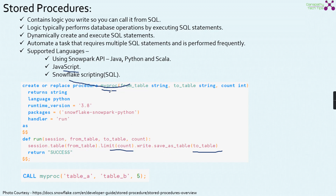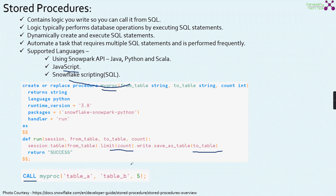Utilizing the Snowpark API for Python, we are firing typical Spark against Snowflake. When you call the myproc function, note that unlike UDFs called within SQL, stored procedures use a specific call statement. You call it with table A, table B, and 5 as arguments. What it does is take table A, select five records from it, and write those five records into table B — that is what this stored procedure does.